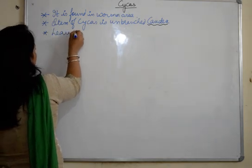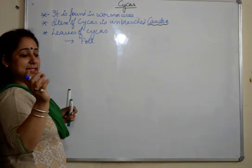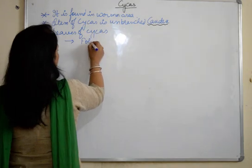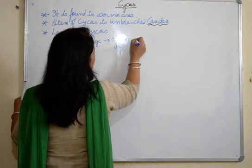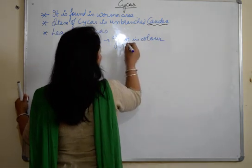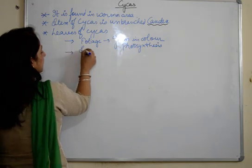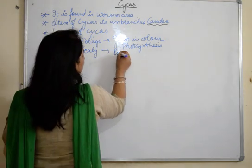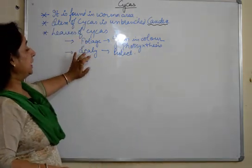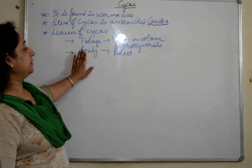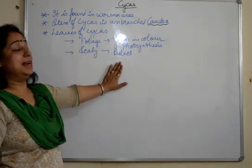Leaves of cycas are of two main types: foliage leaves and scaly leaves. Foliage leaves are green in color and undergo photosynthesis — obviously, if they are green, they will undergo photosynthesis. Scaly leaves provide protection and are found on the stems. In pinus there were three types of leaves — foliage, scaly, and sporophylls — but here in cycas we have foliage and scaly leaves only. Foliage leaves are green and perform photosynthesis; scaly leaves are present on the stem and provide protection.